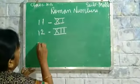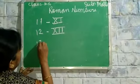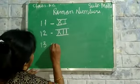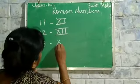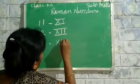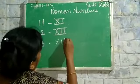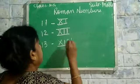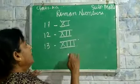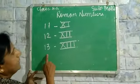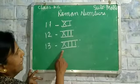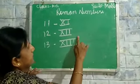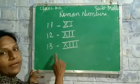Now I will teach you 13. The Roman number is X, I, I, I. What is this Roman number? 13. X, I, I, I — this Roman number is 13.